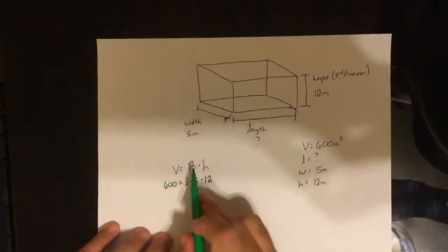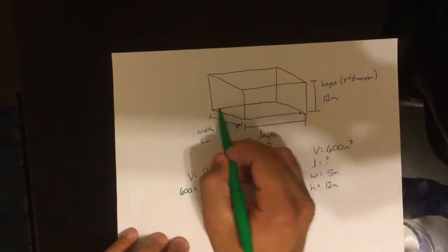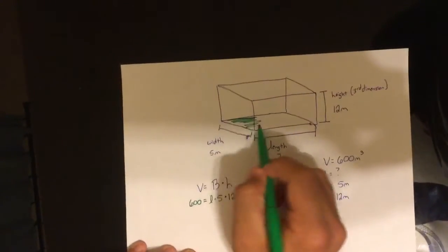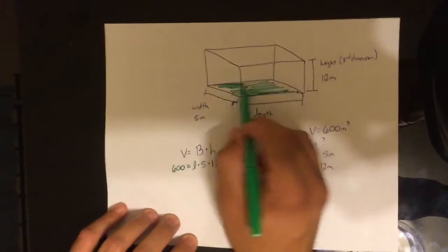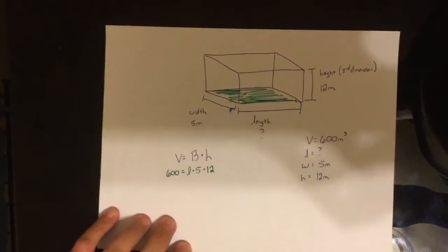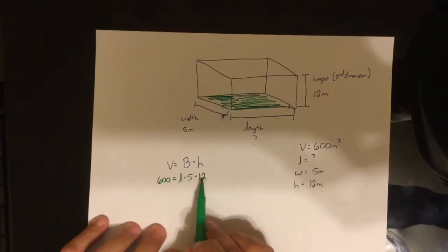It gives me a width of 5 and it gives me a height of 12. Now, remember the big B is the area of the base. That is this rectangle right down here. That's your base. Alright, so the first thing we need to do is 5 times 12.